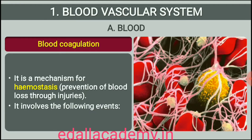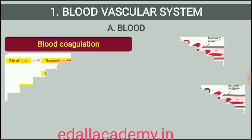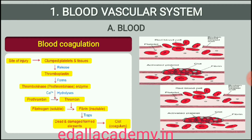Coagulation of Blood. When you cut your finger or hurt yourself, your wound does not continue to bleed for a long time; usually the blood stops flowing after some time. Blood exhibits coagulation or clotting in response to an injury or trauma. This is a mechanism to prevent excessive loss of blood from the body. A dark reddish brown scum formed at the site of a cut is a clot or coagulum formed mainly of a network of threads called fibrins in which dead and damaged formed elements of blood are trapped. Fibrins are formed by the conversion of inactive fibrinogens in the plasma by the enzyme thrombin.